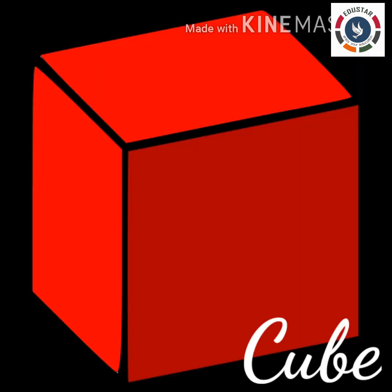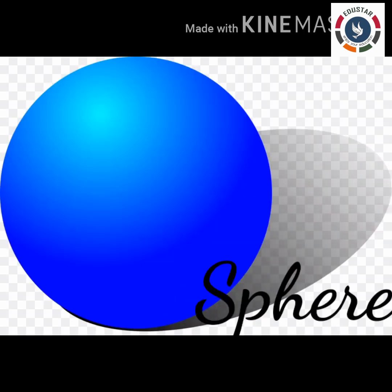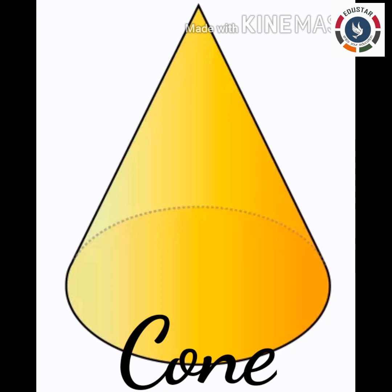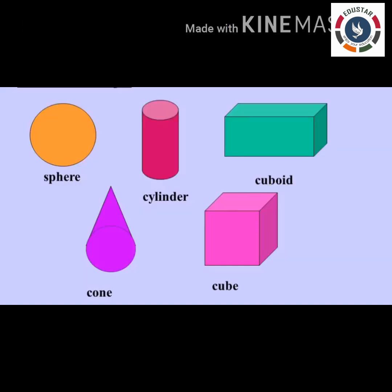A cube has six square faces — all the same size. It has twelve edges, all the same length. It has eight corners. It has flat faces, so it can only slide.